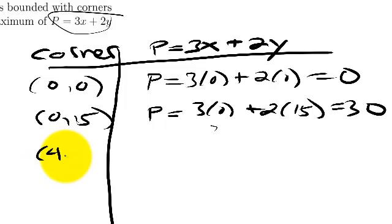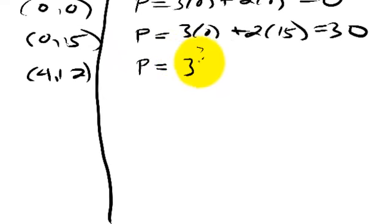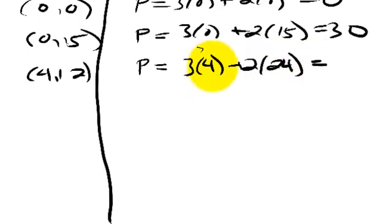We try four, comma, twelve. That's P equals three times four, plus two times twelve. That's twelve, and oh no, I'm plugging in twelve. Sorry. Twelve. And so, that's twenty-four plus twelve. That's thirty-six.